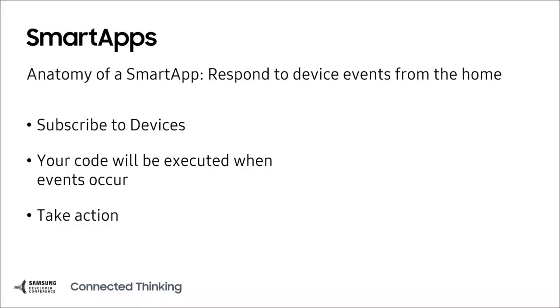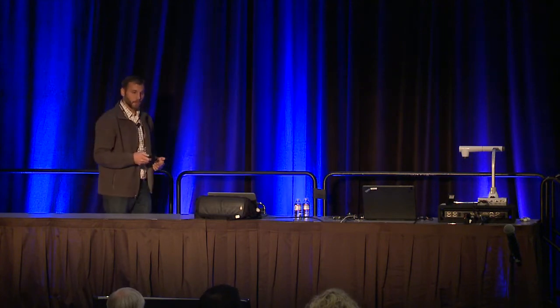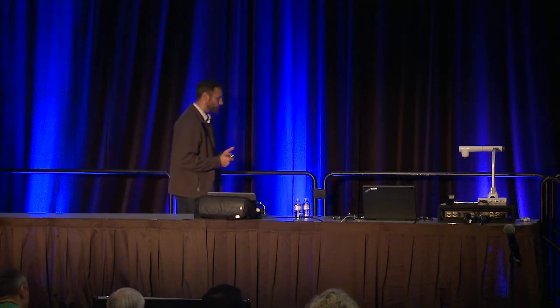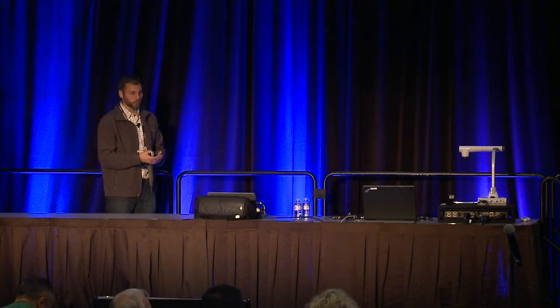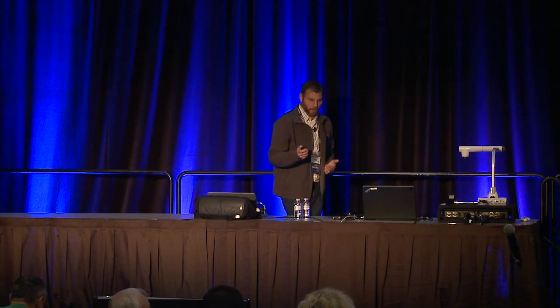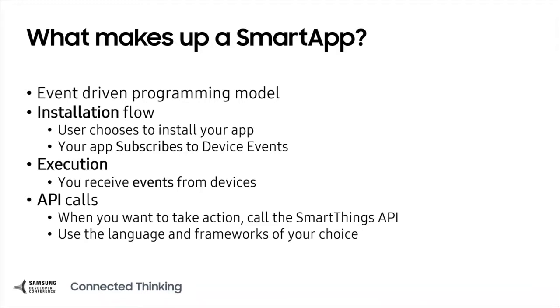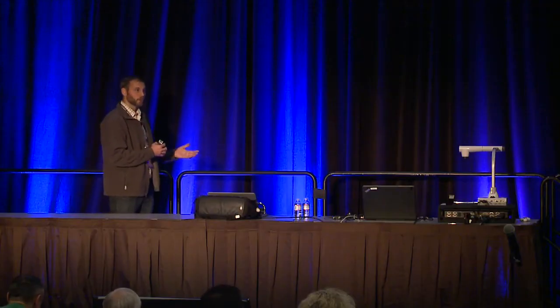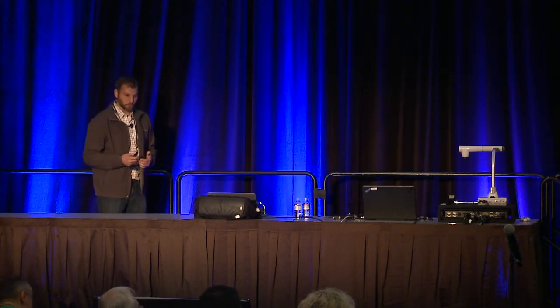A Smart App is really a way to respond to device events from the home. You subscribe to devices, and your code is executed when those devices emit events; then you can take action. A simple example: when there's motion, turn on a light. The user customizes your app as they install it on their mobile device — selecting, say, a Kitchen Motion Detector — and as soon as that motion detector recognizes motion, it sends an event and executes your Smart App so you can turn on the light.